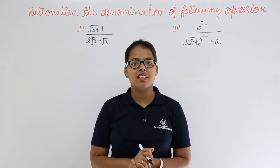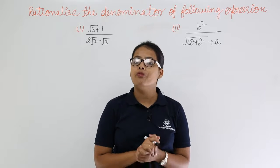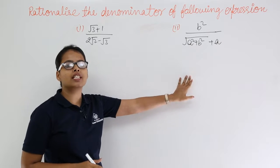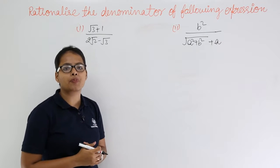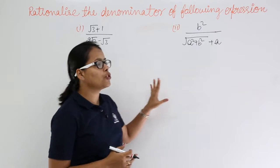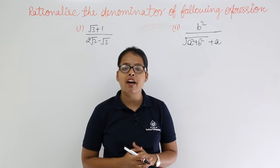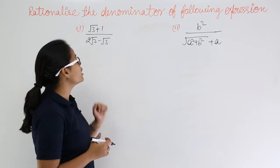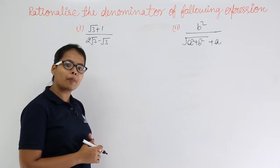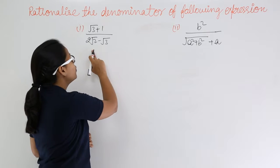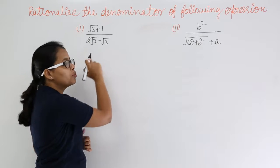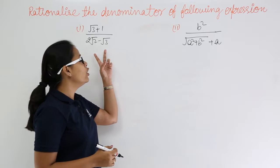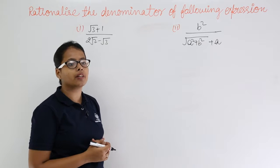Hello guys, let's discuss this problem which says rationalize the denominator of these following expressions. These are going to be more complicated than I have discussed before. The first expression is root 3 plus 1 divided by 2 root 2 minus root 3. Instead of one term in the denominator, there are two terms in subtraction.